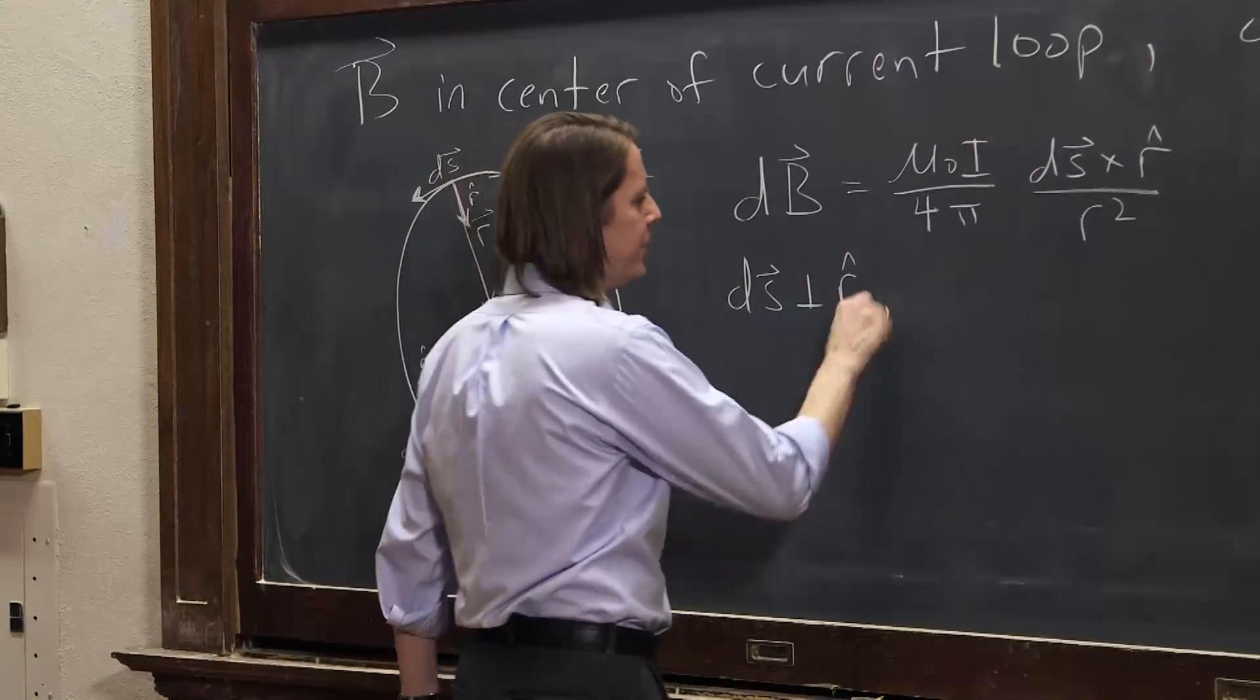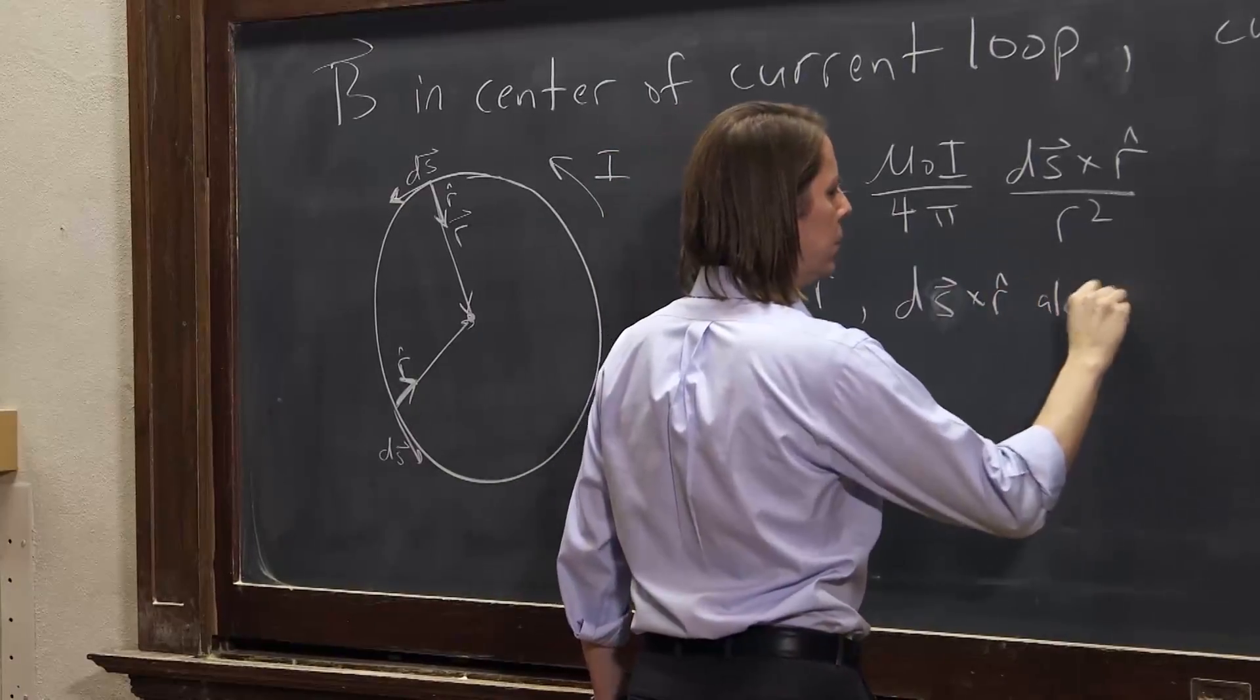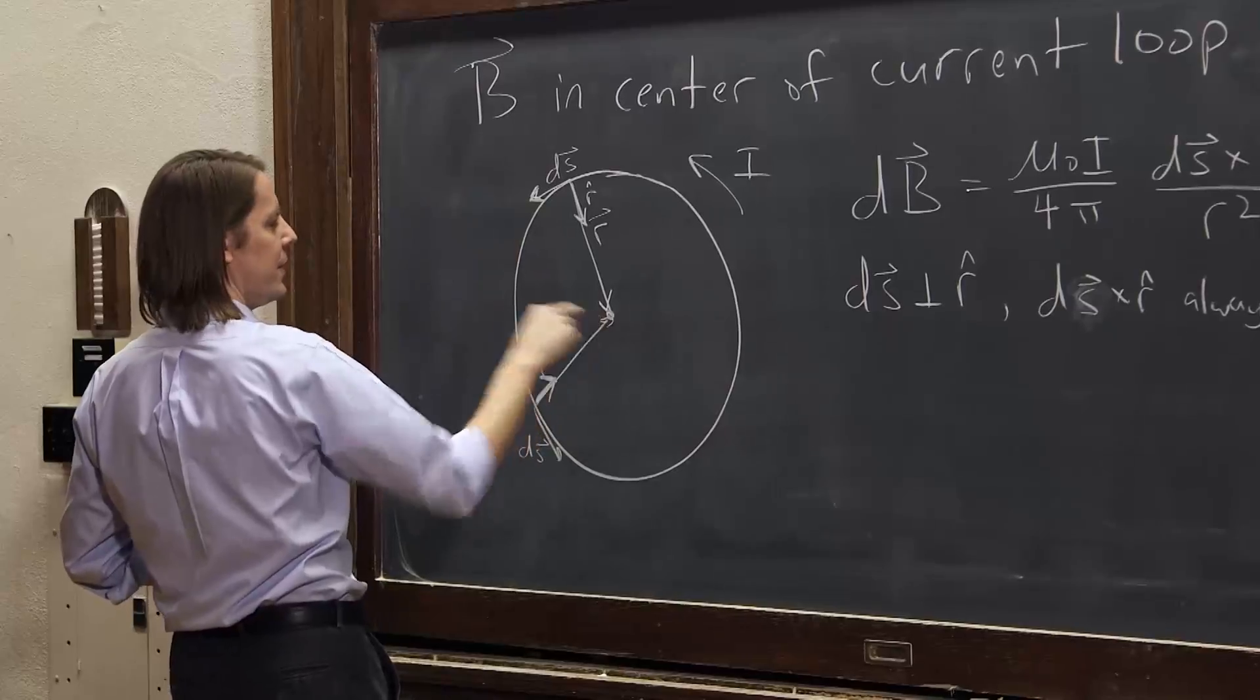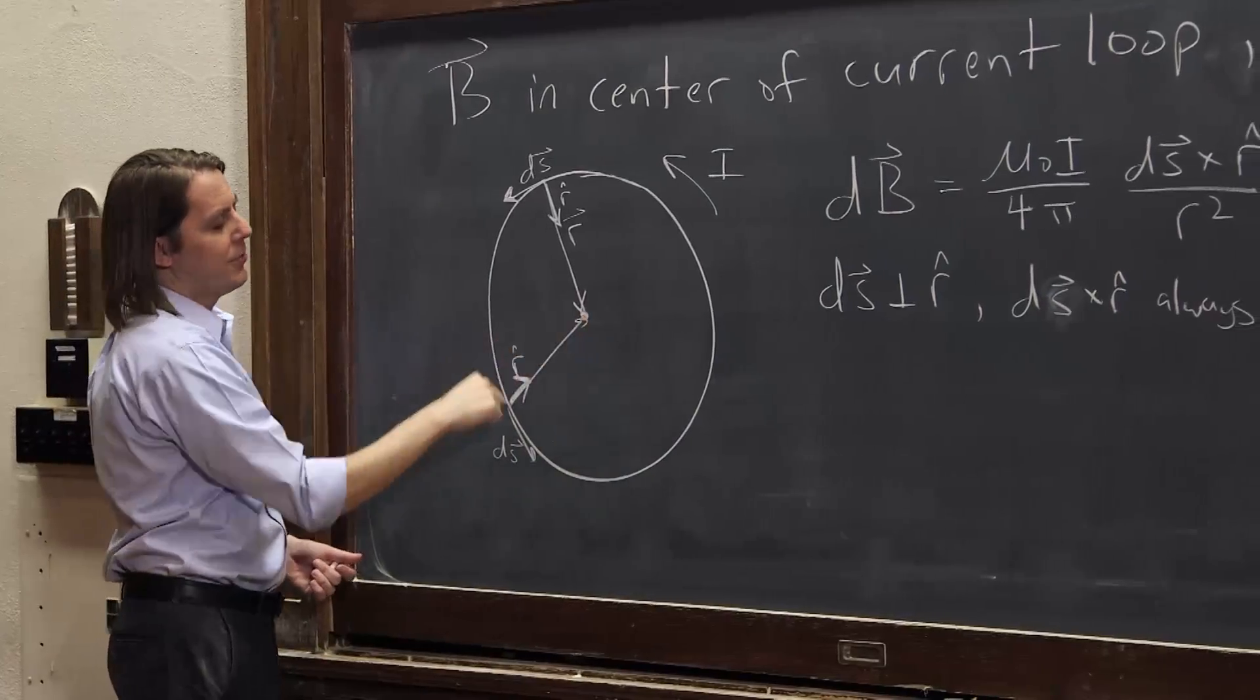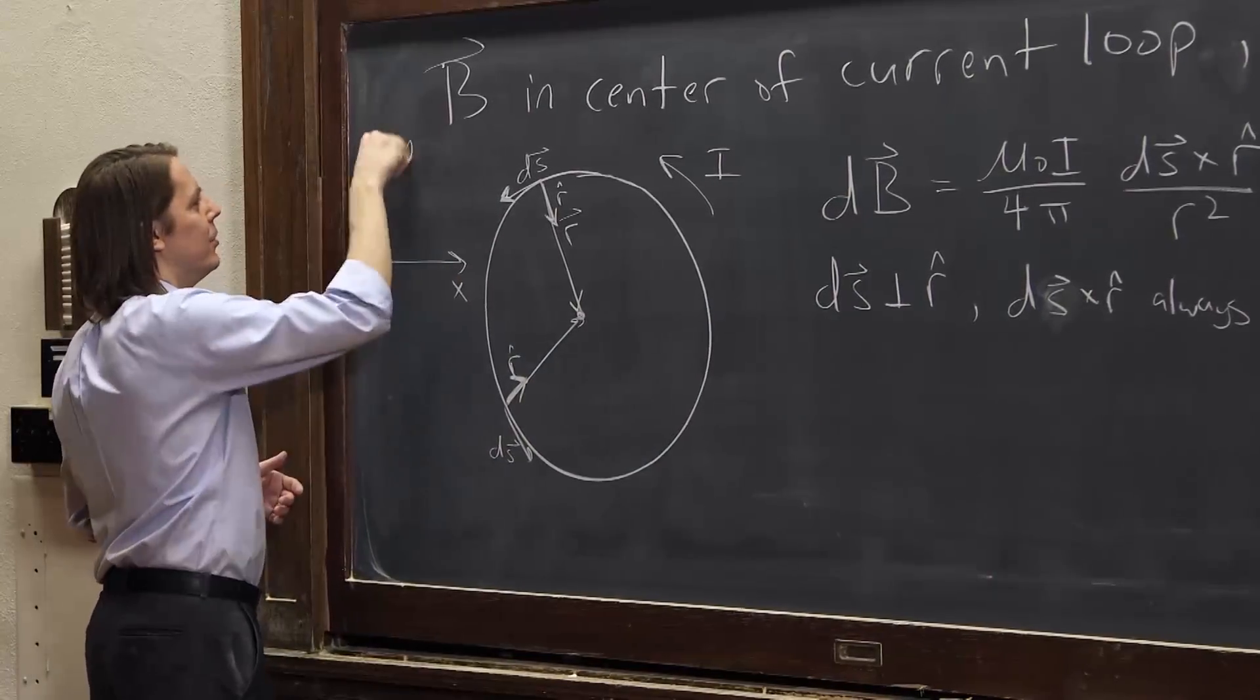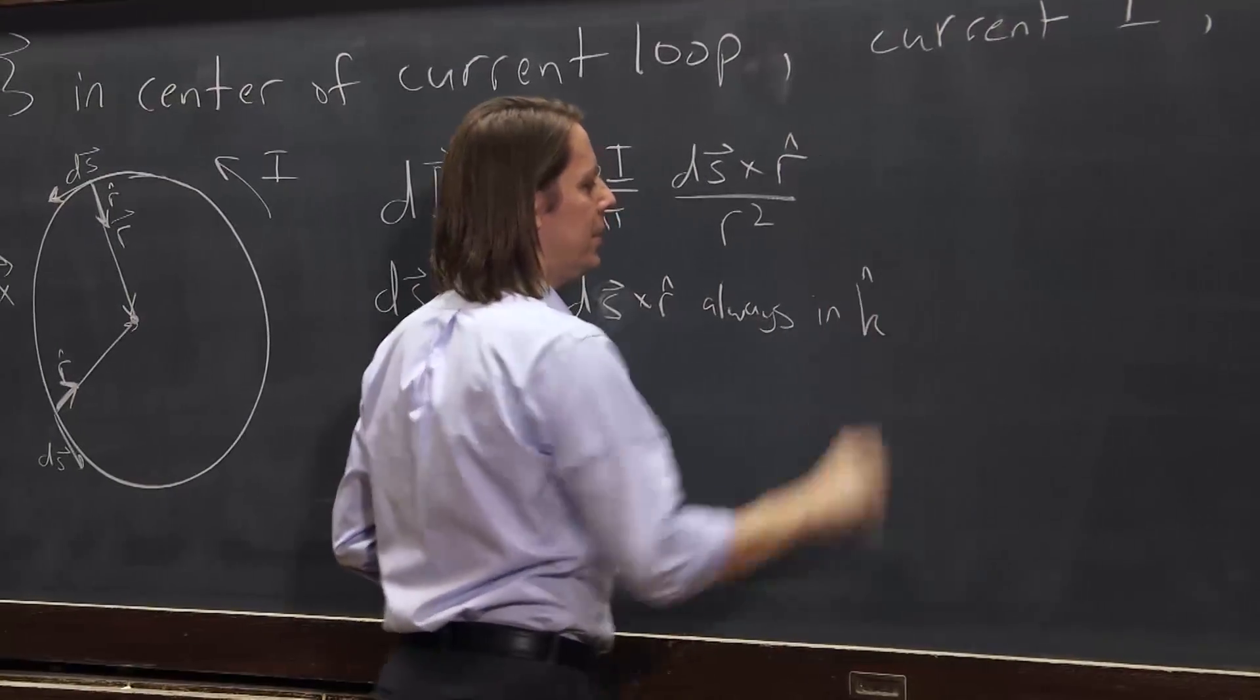And another thing is that the direction dS cross r hat is always in what direction? It's always going to stick out. If we have dS cross r, it sticks out. So the B field will stick out here, or that component of the B field will stick out. dS cross with r, out. dB for that piece will stick out. dB for every piece will stick out. So let's make a coordinate system. Here's x, here's y. x cross y is z, so z sticks out. So it'll always stick out in z, or as we like to call it, a k hat direction.